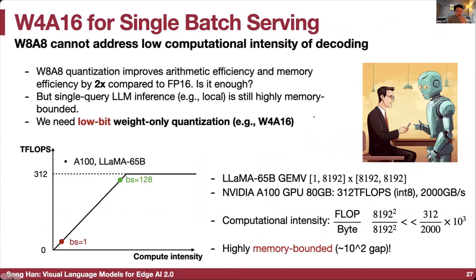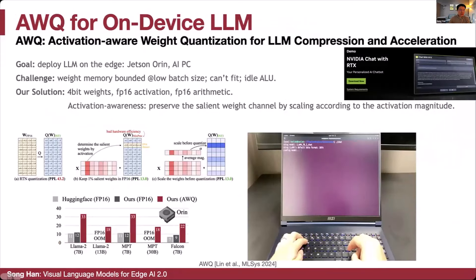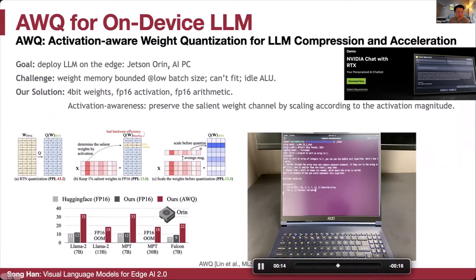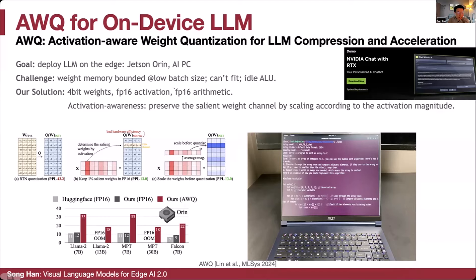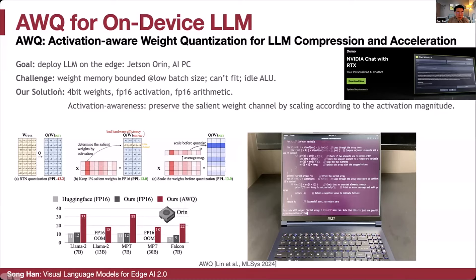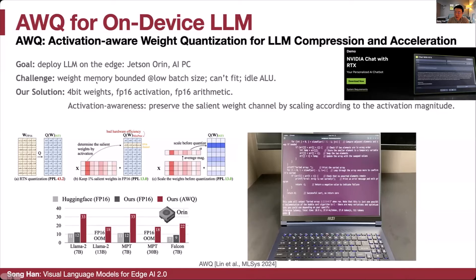For the edge, we want single-batch serving. W8A8 cannot address the low computational intensity during decoding, where single-batch LLM inference is memory-bounded by the weight. So we need to aggressively quantize the weight to 4-bit. Can we quantize the weight to 4-bit without losing accuracy? AWQ, activation-aware weight quantization, is a widely used recipe for on-device LLM compression and acceleration on edge devices like Jetson Orin and AI PC. The idea is to quantize the weight to 4-bit and leave the activation in FP16, solving the memory bandwidth bottleneck for weights while maintaining accuracy since activation is not the bottleneck.